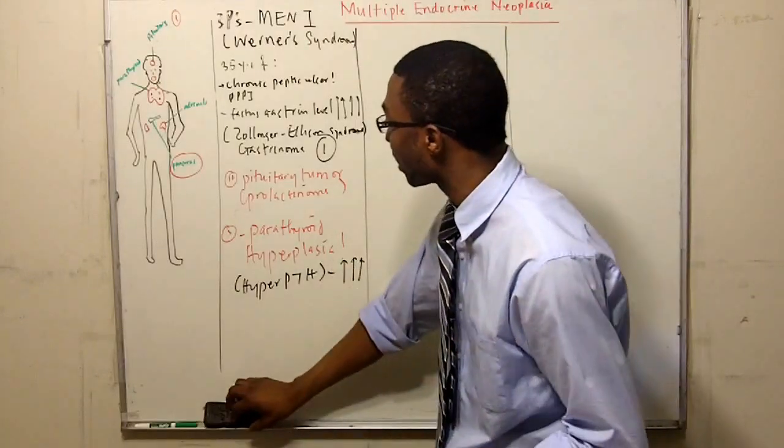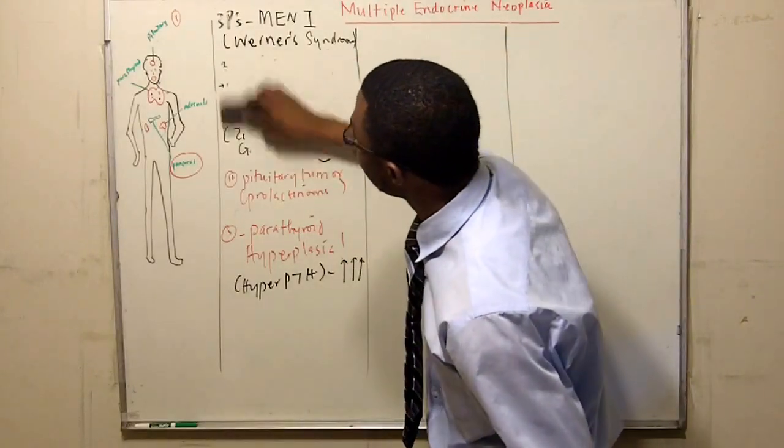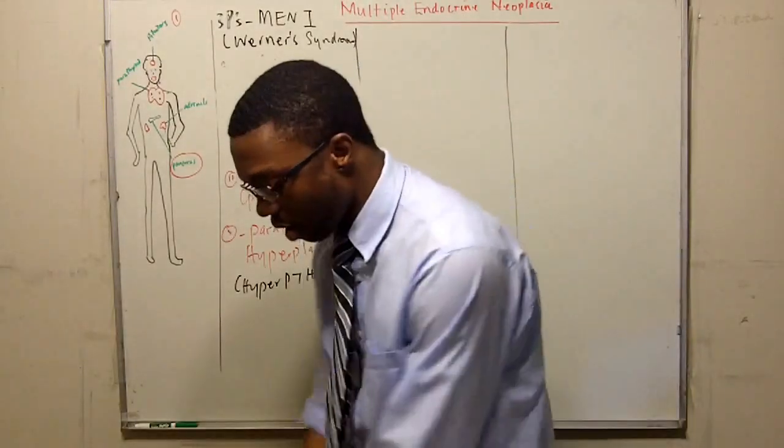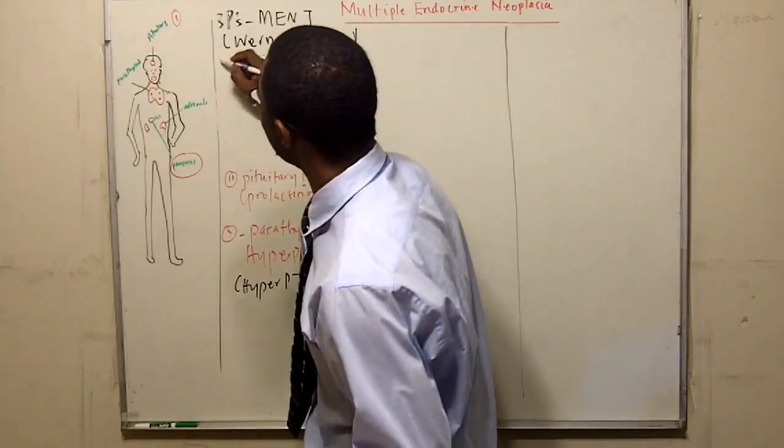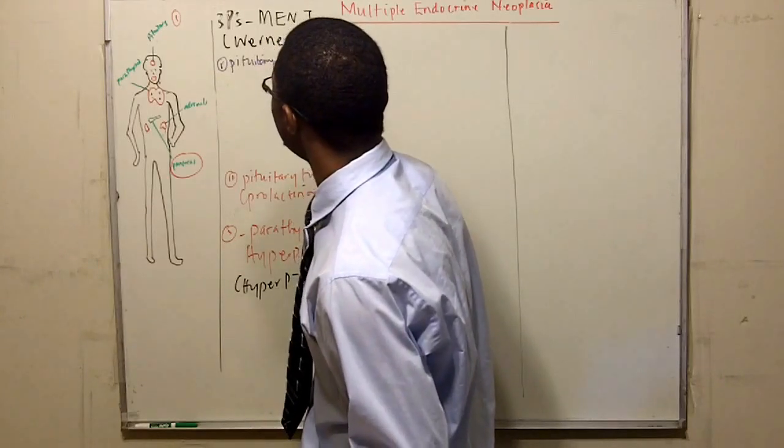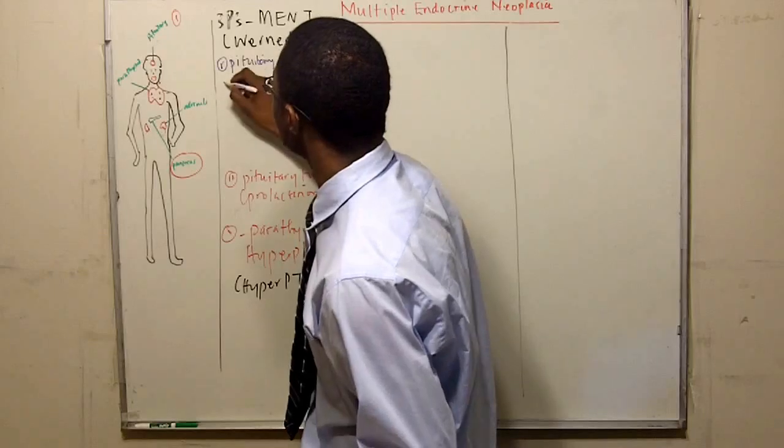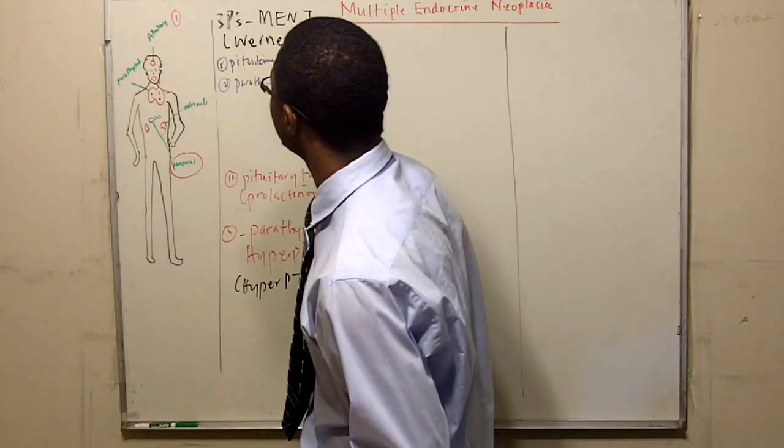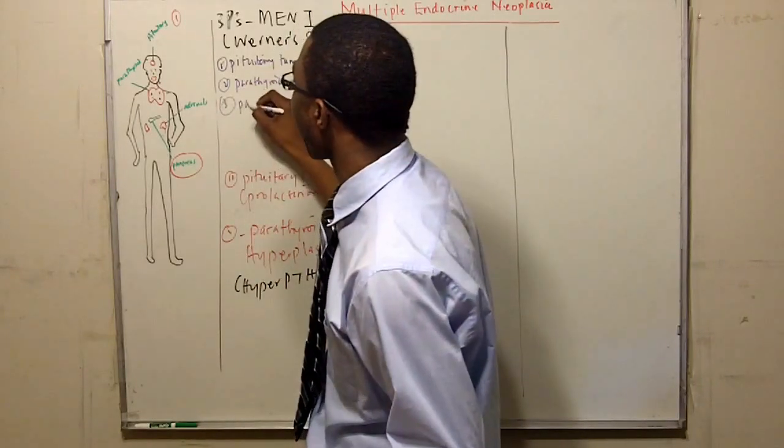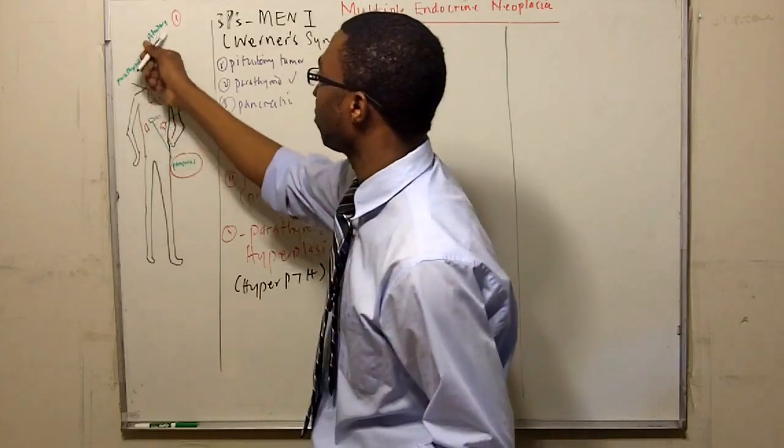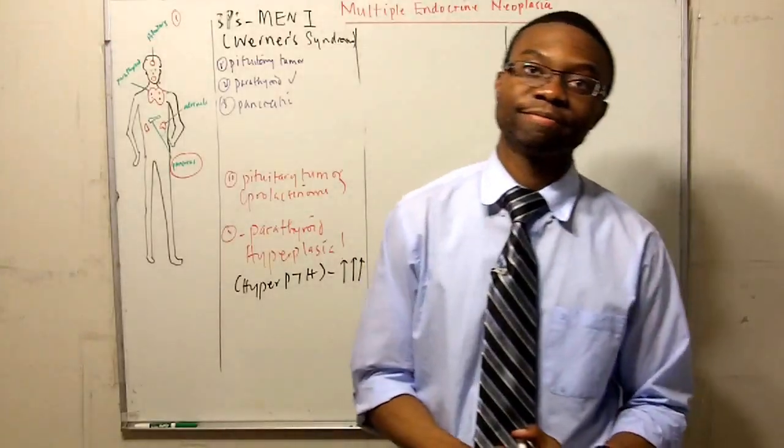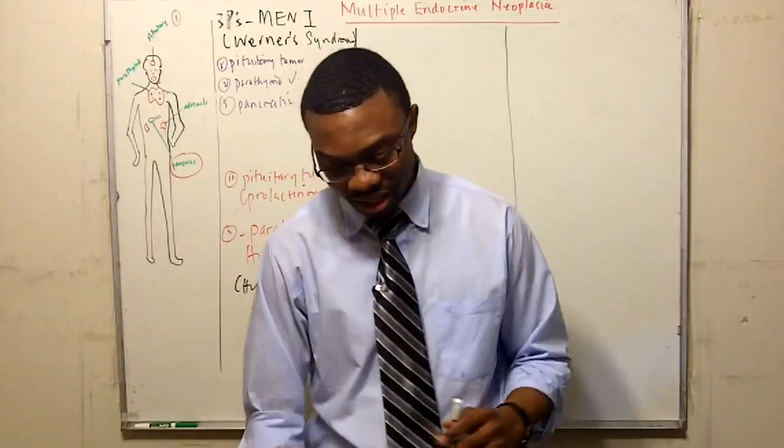So what are the three P's? Now we got to actually write them out. The three P's are: one, pituitary tumor; parathyroid tumor; and last but not least, a pancreatic tumor. Pituitary, parathyroid, and pancreas. That's Werner's syndrome. That's how you remember that. Three P's.